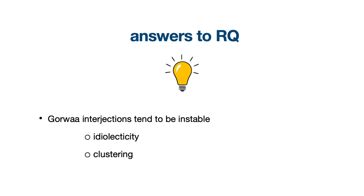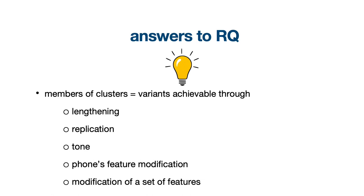Our data demonstrates that GORWA interjections are highly unstable. This instability stems from two main phenomena. First, the larger number of idiolectal interjections, which is characteristic of GORWA speakers, suggests that interjections are prone to mutations — individual speakers easily create new interjections, either by forming them by analogy to existing patterns or by modifying such patterns. This leads to the proliferation of idiolectal tokens. Second, the majority of interjections, both idiolectal and shared, form clusters composed of similar interjective constructions connected through the family resemblance of a formal, phonetic and morphological, and functional type. The variants of a cluster can be achieved through several processes.